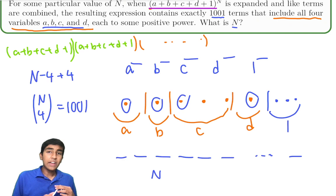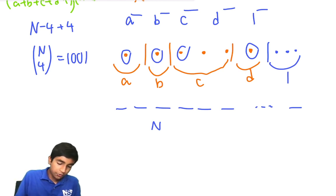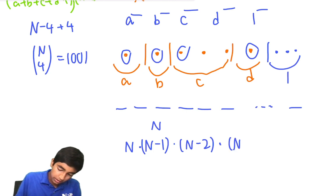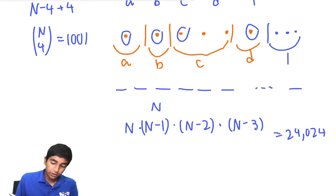So if n choose 4 must equal 1,001, how can we find the value of n? Well, a good trick to note here is that n choose 4 is just n(n-1)(n-2)(n-3) over 24 equals 1,001. So this product is 24,024. Notice that this is approximately n^4, right?